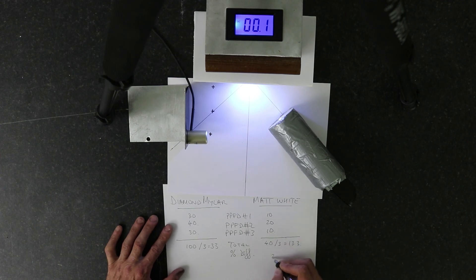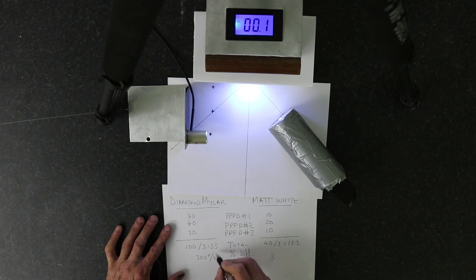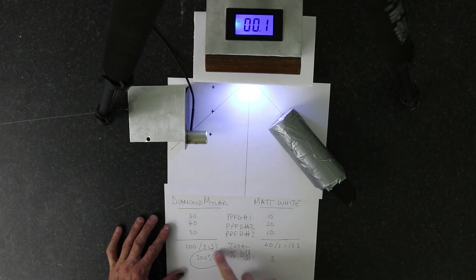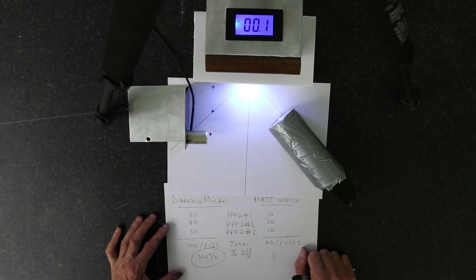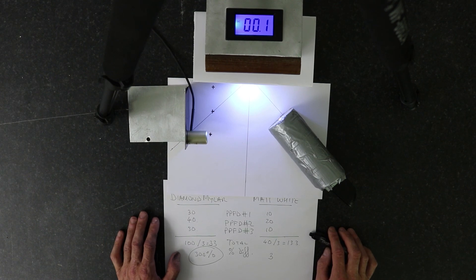So we have 300 percent more light being reflected by the diamond mylar than by the matte white paint. So hopefully this explains it. Hope you liked the video. If you did, please subscribe and take care.